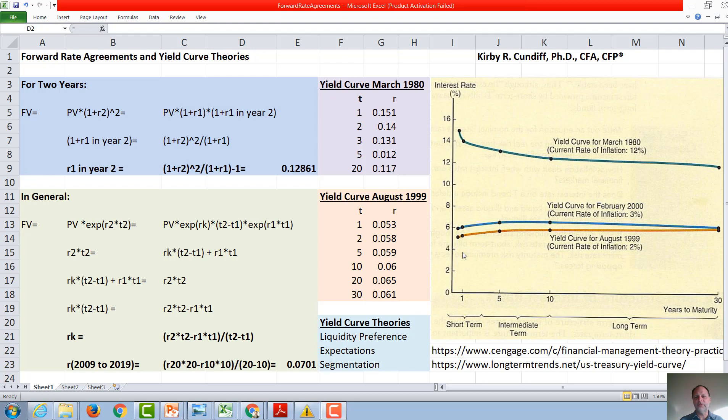Under liquidity preference, investors would prefer to lock up their money for as short a time as possible. They would always like to be able to go to the bank and get their cash back, and therefore they are only willing to lock up their money for a longer time period if they get a higher interest rate for it. So under liquidity preference, you would always have an upward sloping yield curve, as we see here in 2000 and 1999.